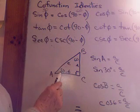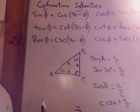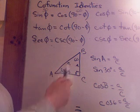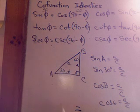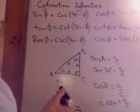So, if I had 10 degrees here, this would be 80. The sine of 10 would be the same thing as the cosine of 80. And basically, that's all the cofunction identities are telling you.